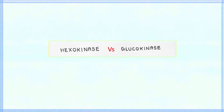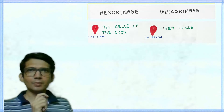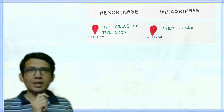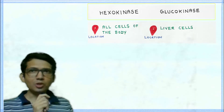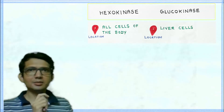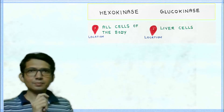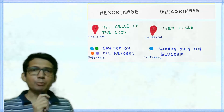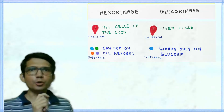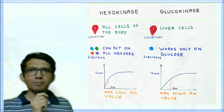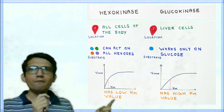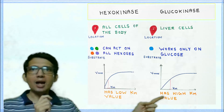You should also know the difference between hexokinase and glucokinase. Hexokinase is located in all the cells of the body whereas glucokinase is located only in the liver cells. Hexokinase can act on all hexose sugars whereas glucokinase works only on glucose. The enzyme hexokinase has a low Km value whereas glucokinase has a high Km value.